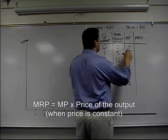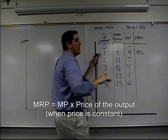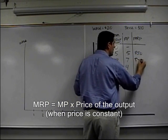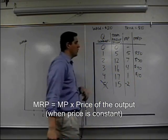So price times five pizzas gives me fifty dollars. This first worker generated an additional fifty dollars for me. Second worker generated an additional seventy dollars. Next one additional forty dollars. Next one additional ten dollars. And I don't care about that fifth worker.